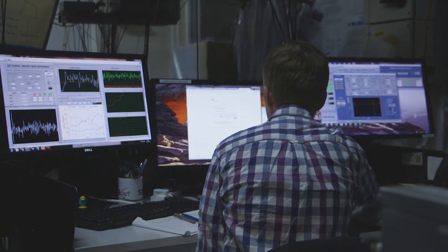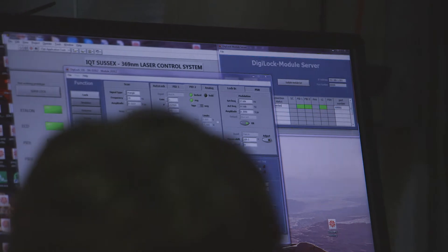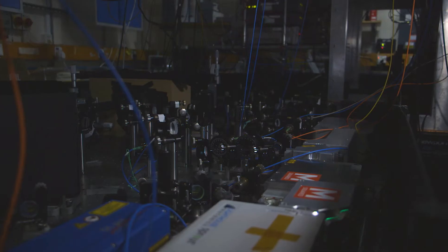Certain things, for example individual atoms, can be in two places at the same time and what a quantum computer does is it uses these quantum mechanical behaviors to make a very fast computer.